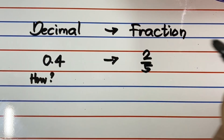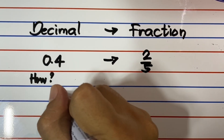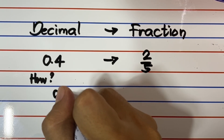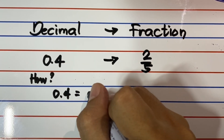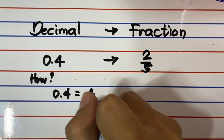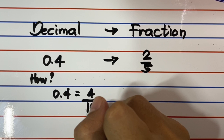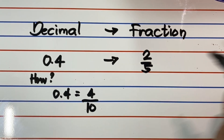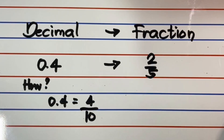How do we convert 0.4 or four-tenths to fraction? Observe that it has one decimal place, that is 4. Simply drop the decimal point, then write 4. The denominator must correspond to the decimal place of 4, which is tenths. Remember, the place value of the number immediately to the right of the decimal point is always tenths. The next to it is hundredths. So we get 4 over 10, or four-tenths.